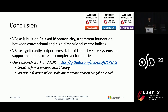This concludes the VBase talk. VBase is built on relaxed monotonicity — a common foundation between conventional and high-dimensional vector indices — and significantly outperforms state-of-the-art vector systems on supporting and processing complex vector queries. In this talk I only scratched the surface of VBase; if you are interested, there are many more details in our paper. We are also going to open source VBase under the name MSVBase, so please stay tuned. Our team has also invested significant research effort in vector systems, particularly ANN; a link is included in the slides.